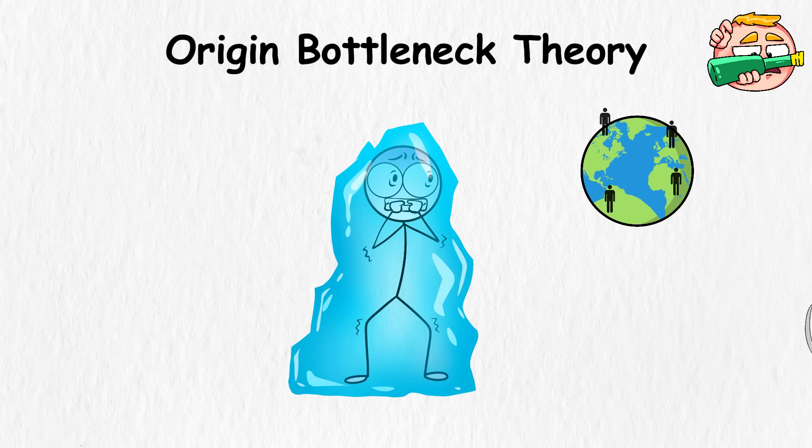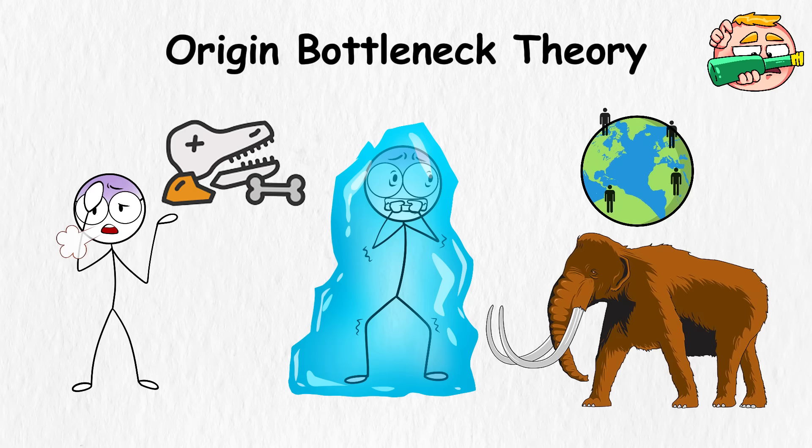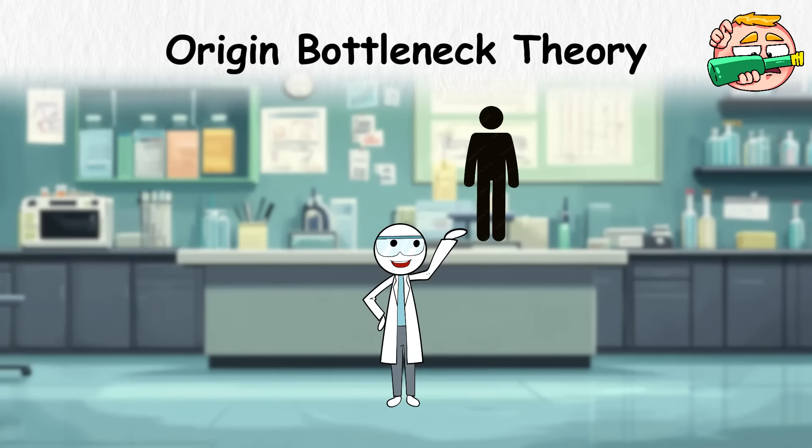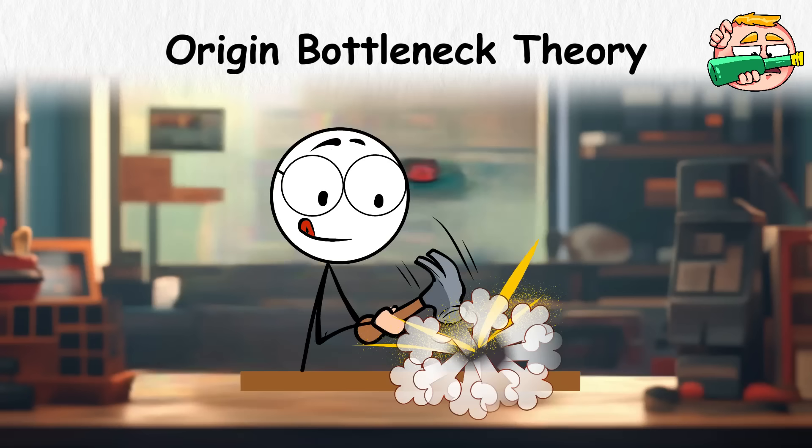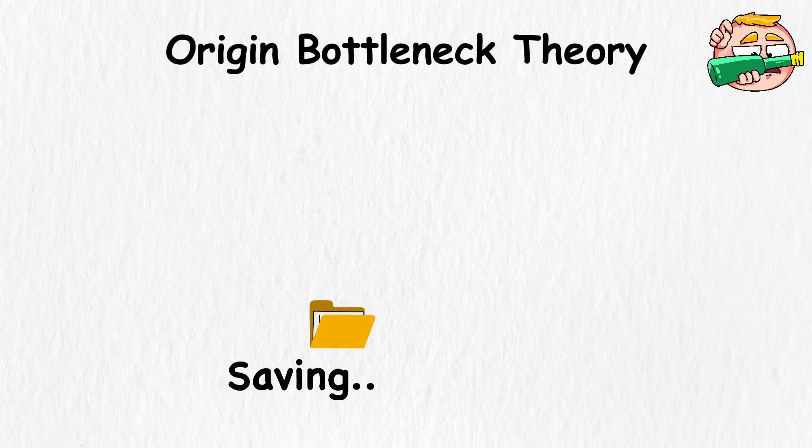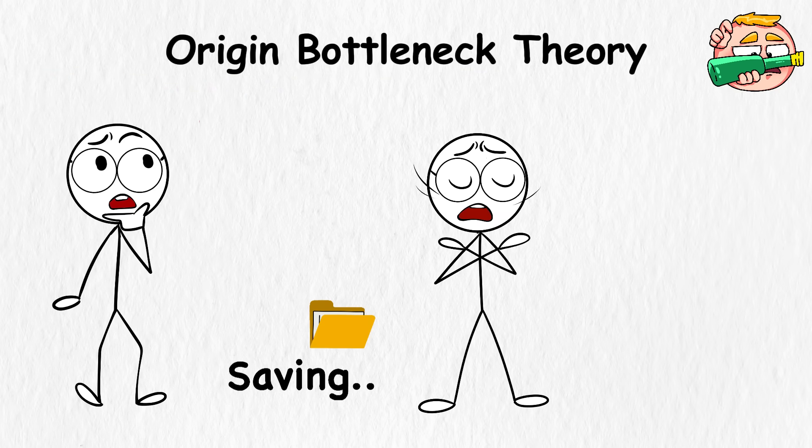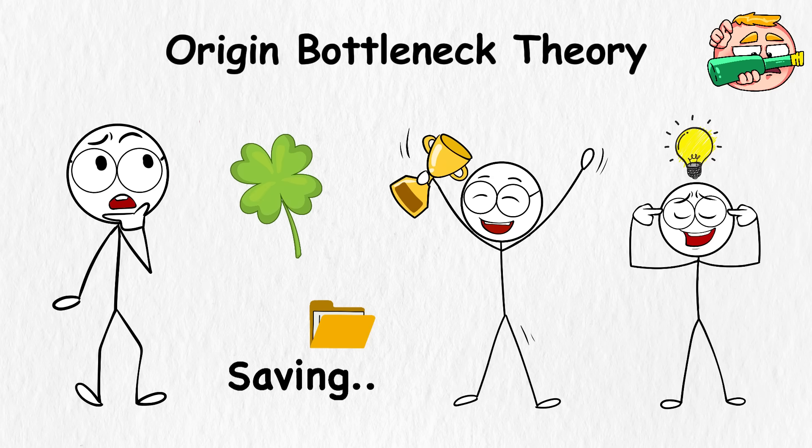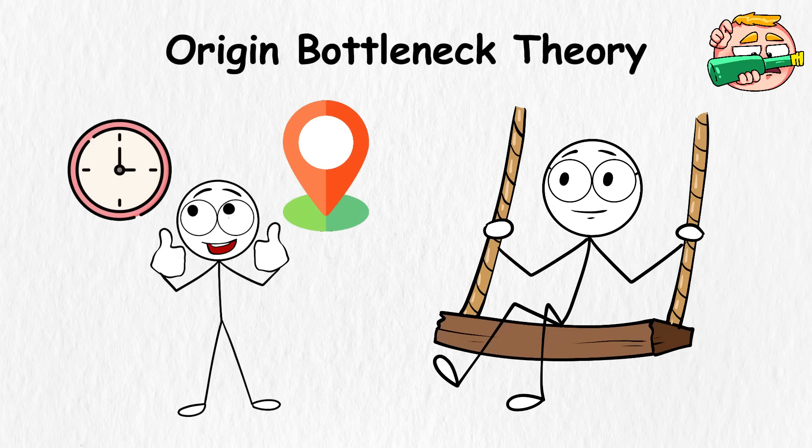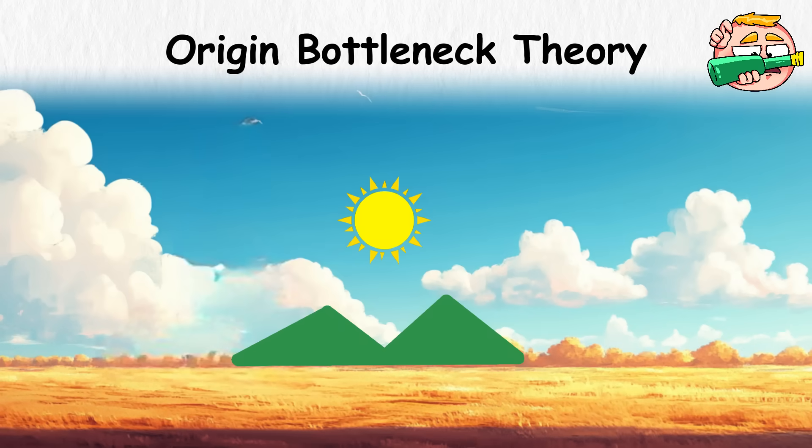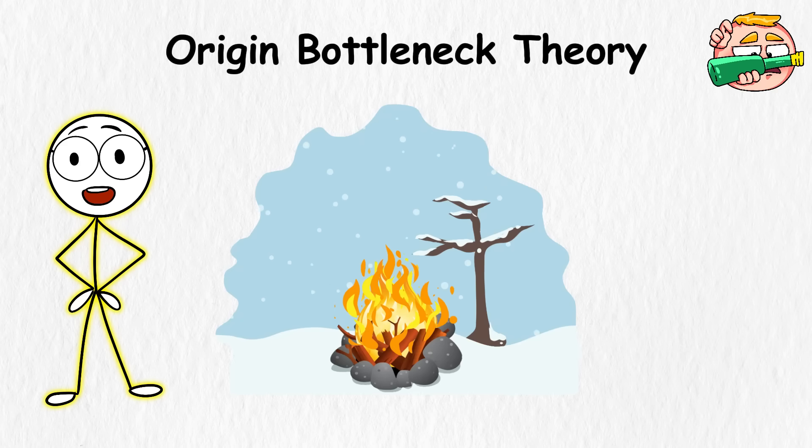Early humans were scattered, freezing, and one mammoth burger away from extinction. Genetic studies show that today's humans come from a surprisingly small gene pool. That could mean most early humans were wiped out, leaving just a narrow group behind to rebuild. Like hitting restart on a game, but only saving one file. If this theory is right, it wasn't strength or intelligence that made us win. It was luck. The right people in the right place at the right time. Hanging on just long enough for the future to exist. Every person alive today might come from the same small campfire that burned through the cold.